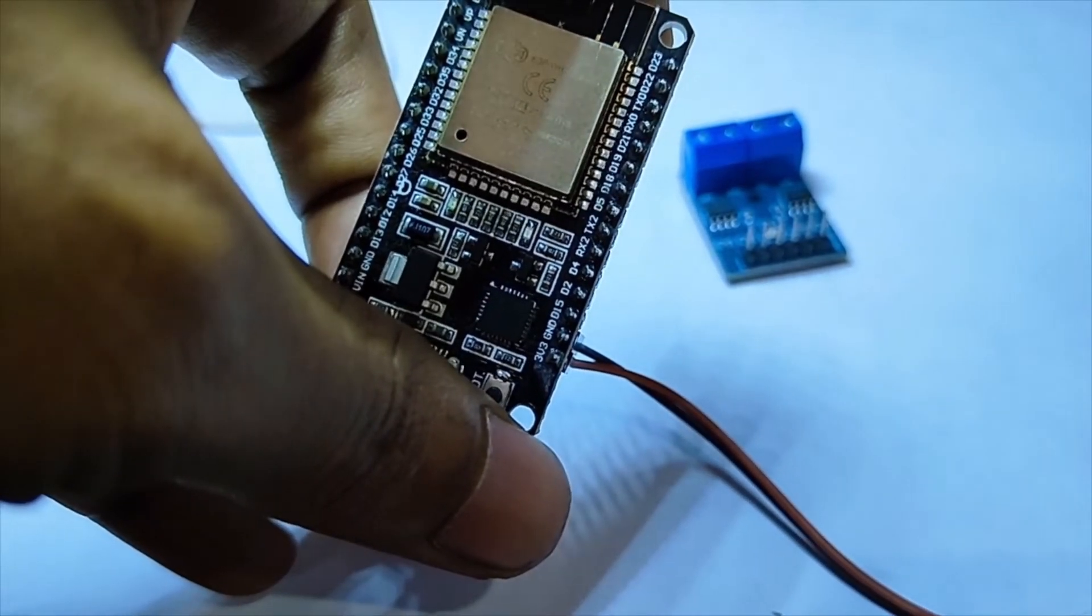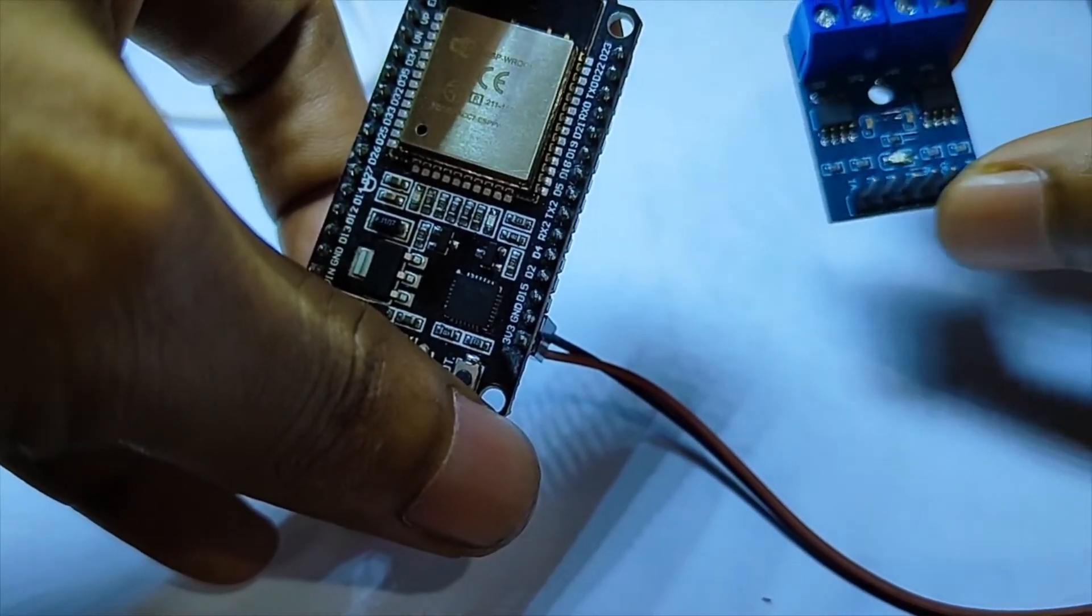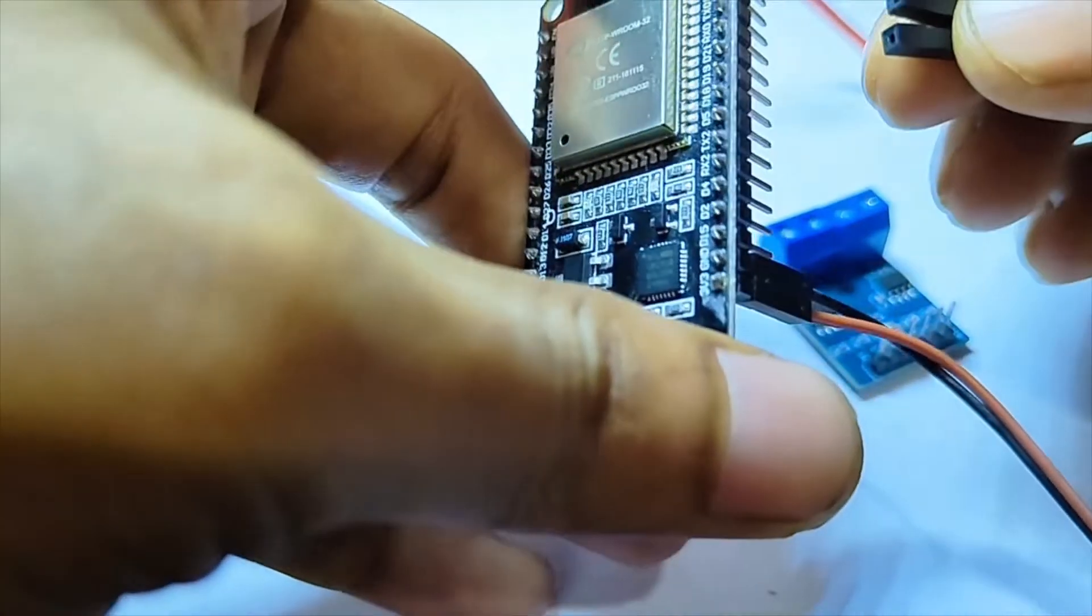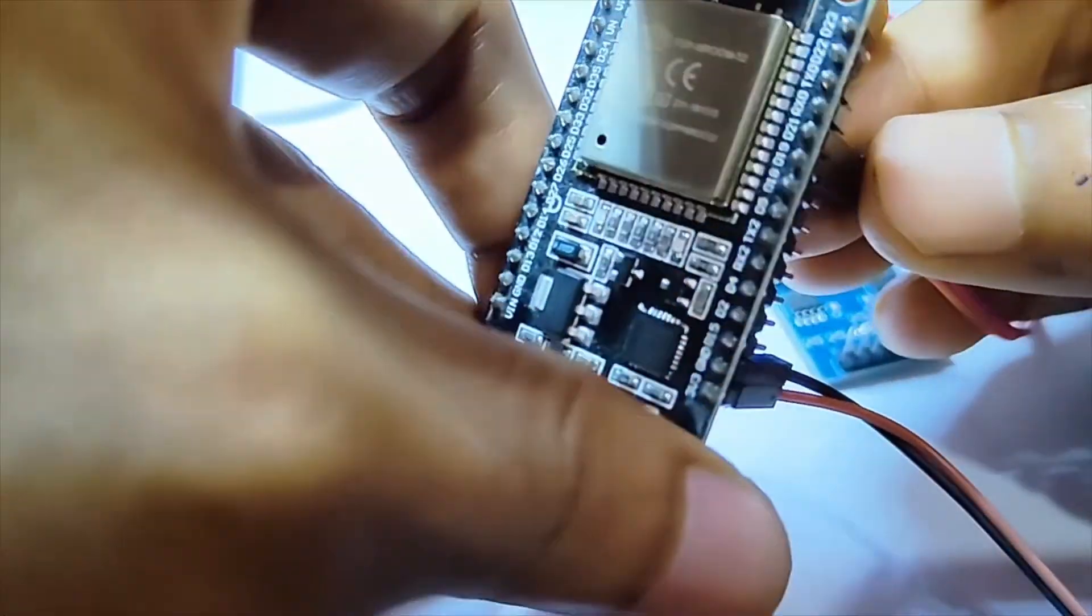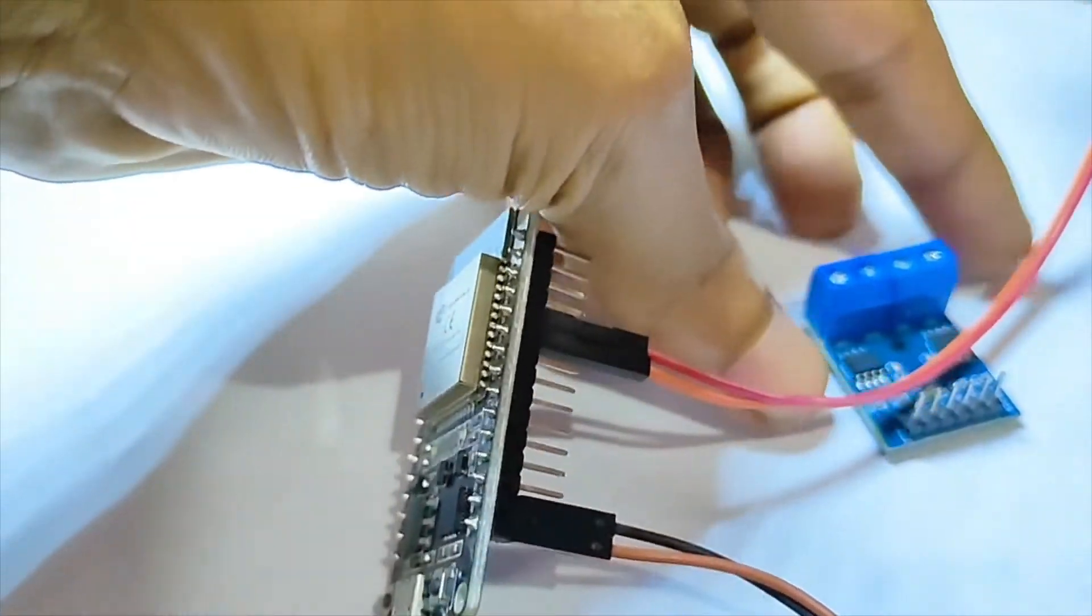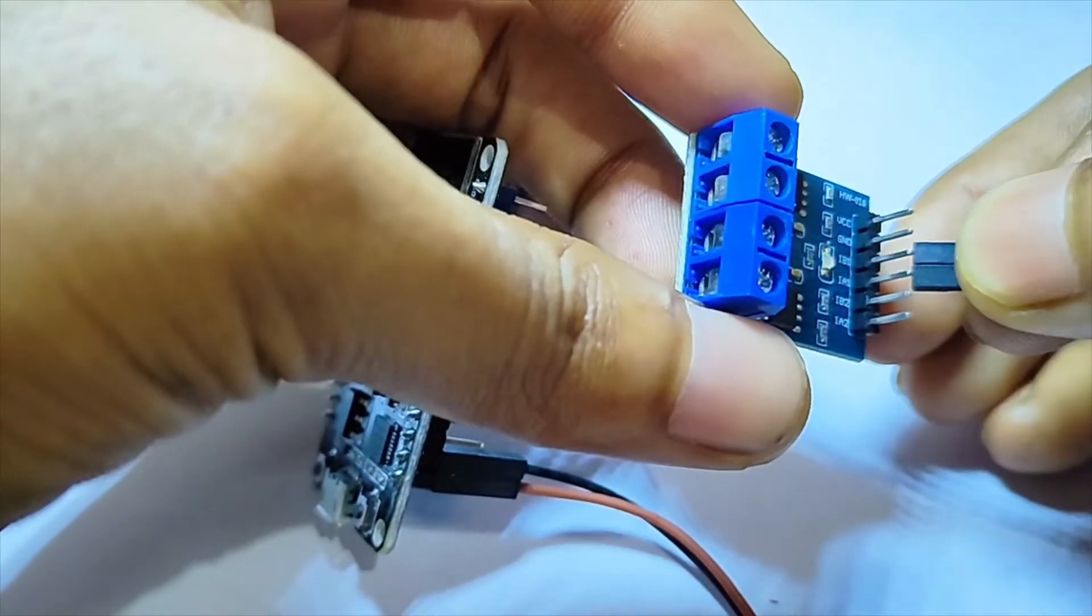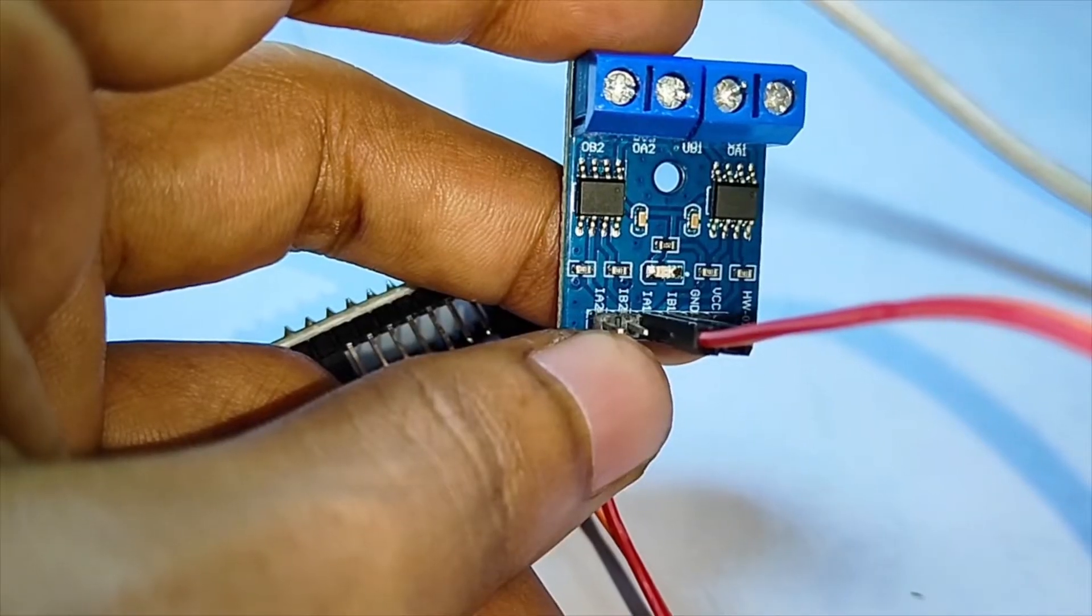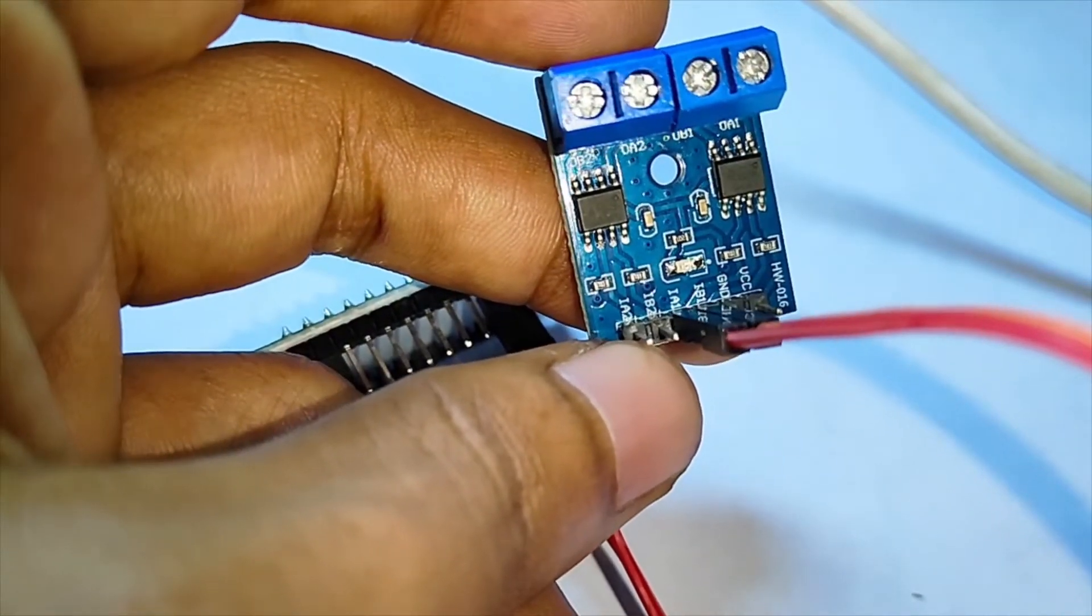Now, I am going to connect the GPIO pins D19 and D21 to the IA1 and IB1 pins of the L9W10 motor driver. Since I connected the IA1 and IB1 pins of the L9W10S motor driver to the ESP32.